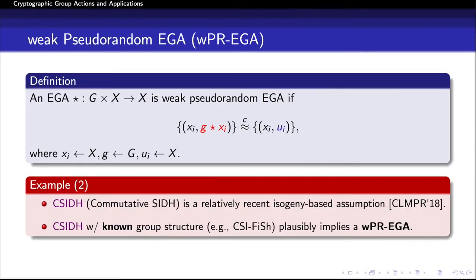The second example is more important and is central to our work. CSIDH is a recent isogeny-based assumption introduced by Castryck et al. at AsiaCrypt 2018. A variant of the CSIDH assumption plausibly implies a weak pseudo-random EGA. I'm not going to cover details of the assumption, but the key point is that a variant of CSIDH implies a weak pseudo-random EGA. CSI-Fish is basically a variant of CSIDH in which the group structure is known. We saw two examples of weak pseudo-random EGA: one based on DDH and one based on a variant of CSIDH.